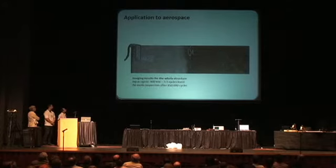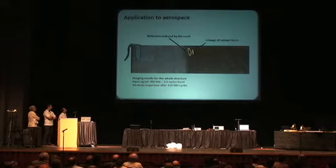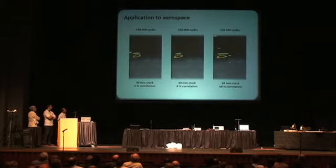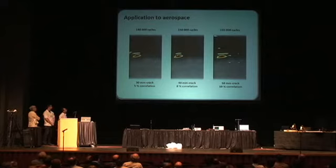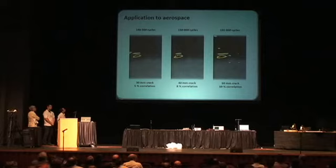Here is a typical imaging result obtained with the A0 mode after 150,000 cycles. With appropriate signal processing, only the reflections from the crack and from the change of contact force are apparent. We have obtained images as the crack was propagating with the same inspection parameters. As you can see, the spot size increases with the number of cycles. So we can not only localize, but also follow and give a severity level associated with the correlation.